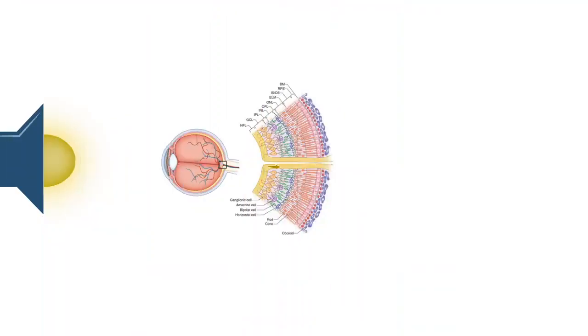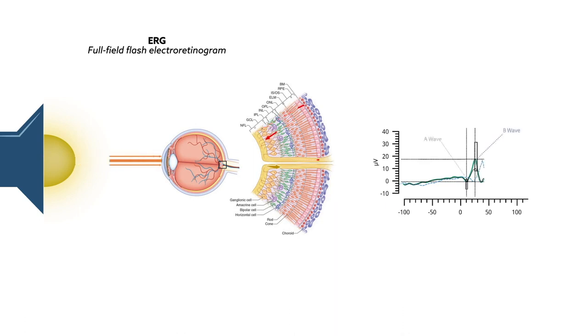To be sure, an additional test option is the full-field flash electroretinogram, or ERG. An ERG uses light to assess the function of photoreceptor, bipolar, and ganglion cells in the eye.